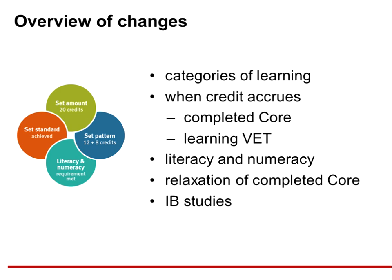While the focus of this webinar is on the new QCE requirements, you may be aiming to identify what will be different from the current QCE. I will provide a brief overview of some of the changes, but it is important to remember that the point of truth for the new QCE requirements will remain the QCE and QCIA Policy and Procedures Handbook. Schools will have to engage with that in order to provide advice to staff, students and parents for implementation. There will be three categories of learning: Core, Preparatory and Complementary. Complementary replaces the current enrichment and advanced categories. Extension subjects will be classified in the core category of learning.